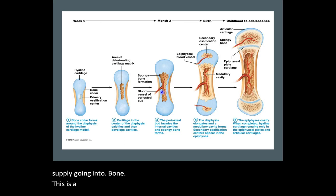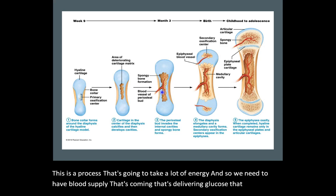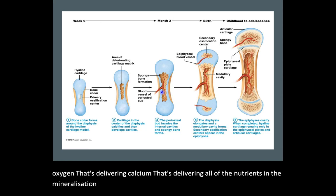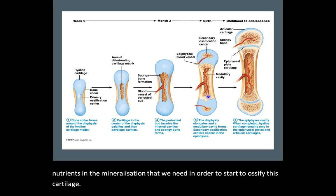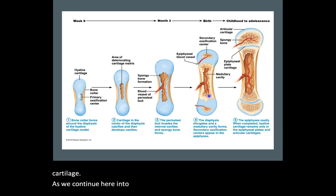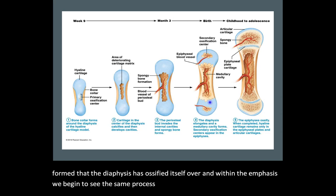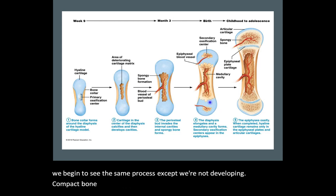This is a process that takes a lot of energy, so we need blood supply that's delivering glucose, oxygen, calcium, and all of the nutrients and mineralization needed to start to ossify this cartilage. As we continue into birth, you can see that the medullary canal is formed and the diaphysis has ossified over. Within the epiphysis, we begin to see the same process — except we're developing trabecular bone, spongy bone — not compact bone.